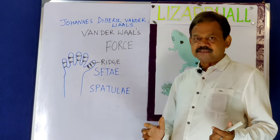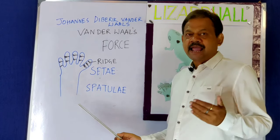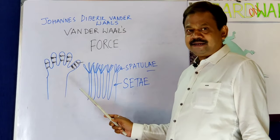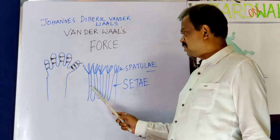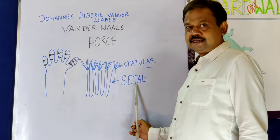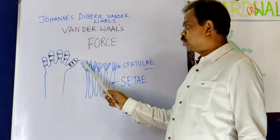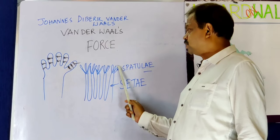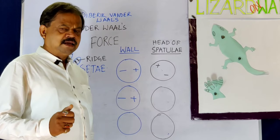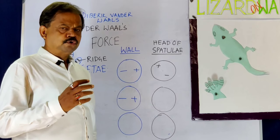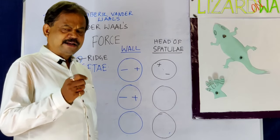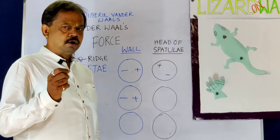Attachment takes place between the spatulae and the molecules of the wall. From each ridge, these fiber-like structures called setae develop, and at the end they are highly branched — each branch is called a spatula. Now let's see how the force of attraction is created between the spatulae and the wall.